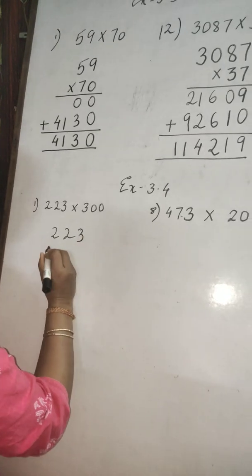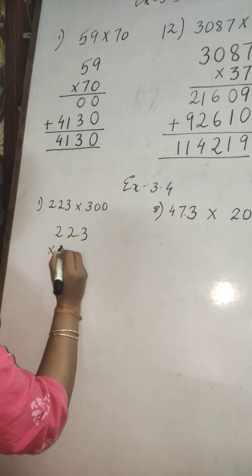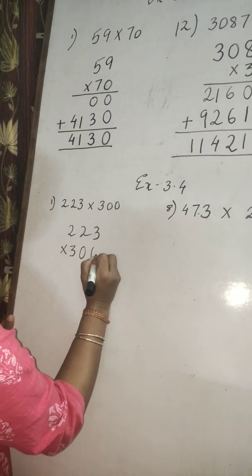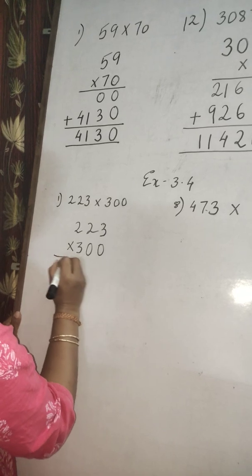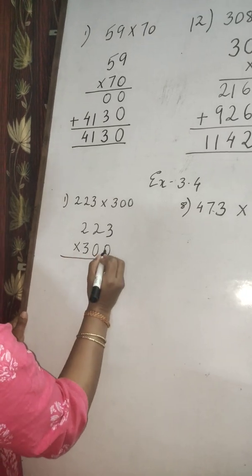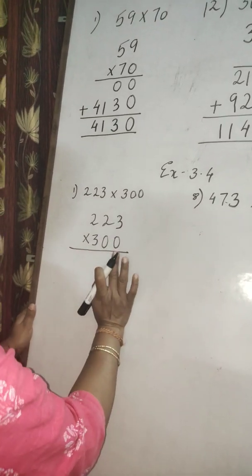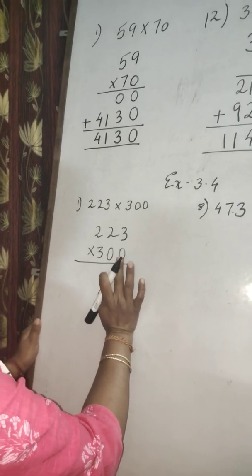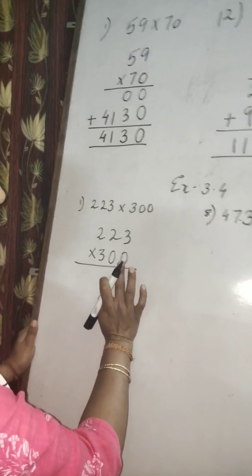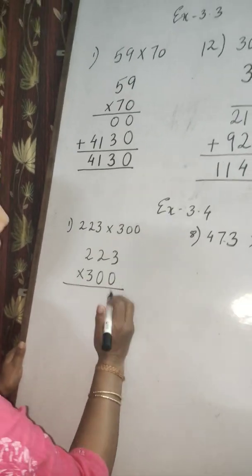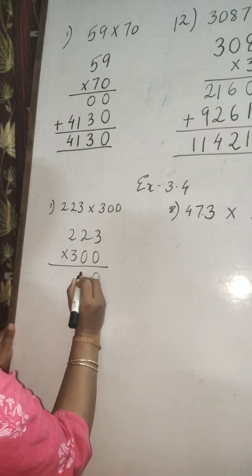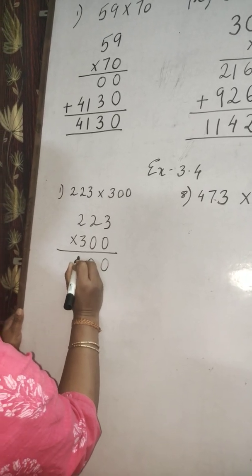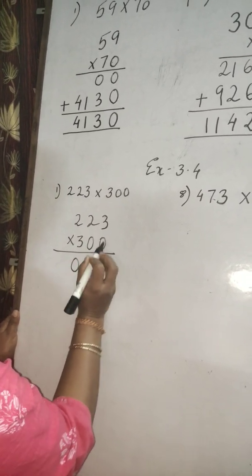Example: 223 multiply into 300. First, the same way — multiply with the number in the ones place, that is 0. 0 times 3 is 0, 0 times 2 is 0, 0 times 2 is 0. Now to multiply with the number in the tens place, you have to leave the ones place. Put 0. 0 times 3 is 0, 0 times 2 is 0, 0 times 2 is 0.